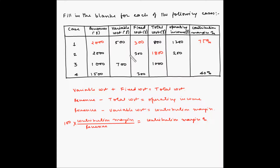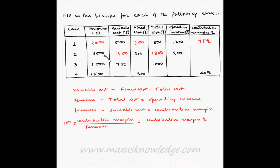We know that variable cost plus fixed cost equals total cost. Taking variable cost as x, x plus 300 equals 1800, so variable cost equals 1500 dollars. The contribution margin is revenue minus variable cost, so 2000 minus 1500 equals 500. The contribution margin percentage is 500 divided by 2000, multiplied by 100, which is 25 percent.